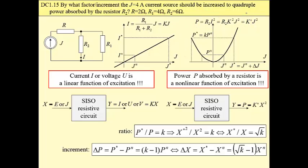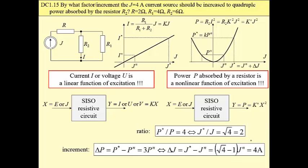Then, if our ratio of power is k, then a ratio of input should be the square root of k. And then we can easily calculate the increment. Increment is square root of k minus 1 multiplied by the nominal value. In our case, as k is 4, then a ratio of input of excitation should be 2, and then increment should be 4 amps.